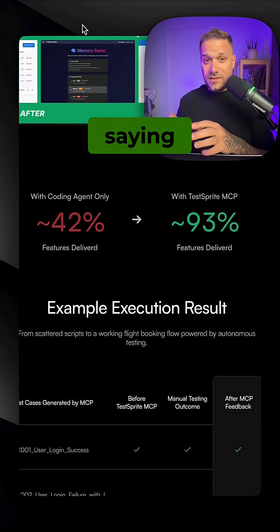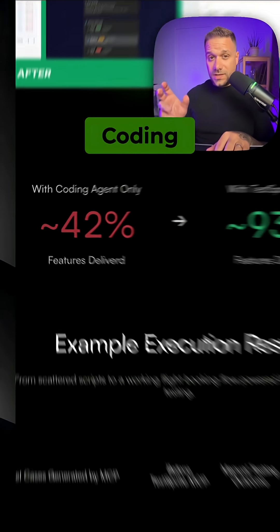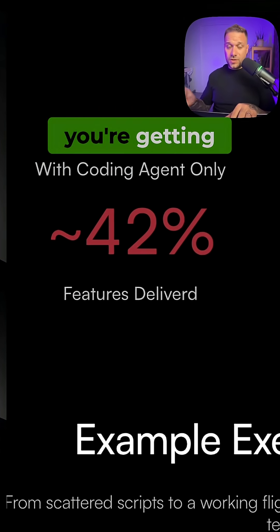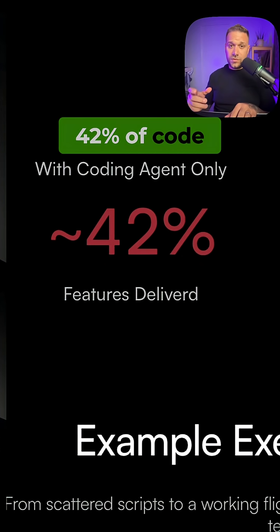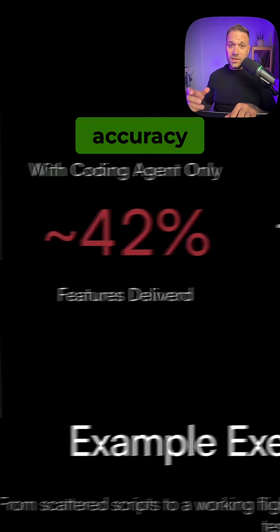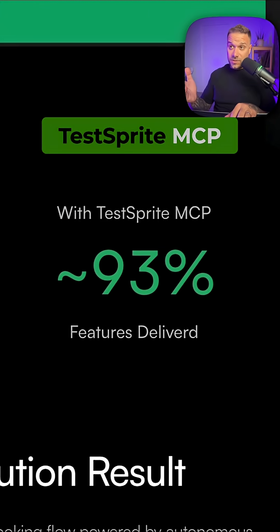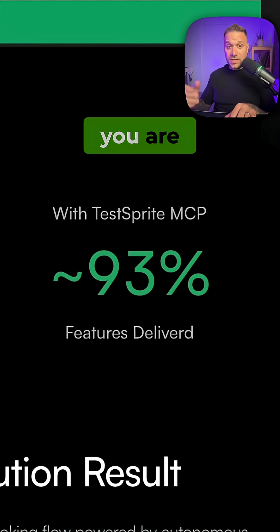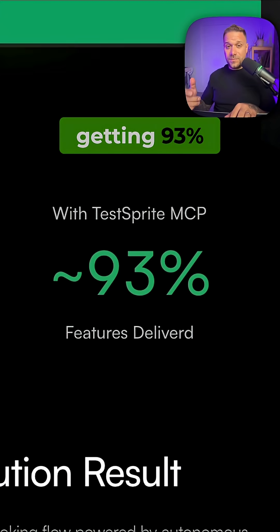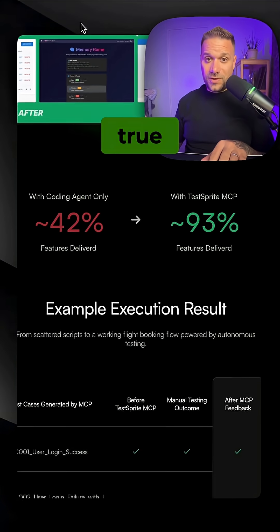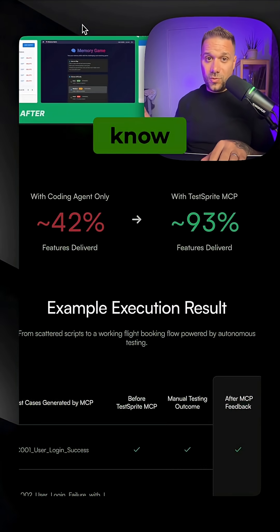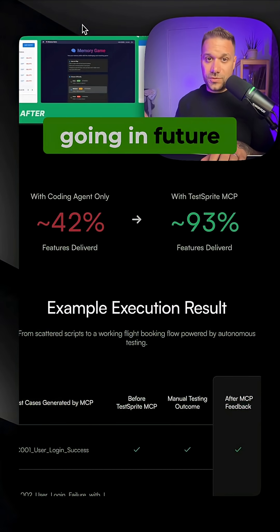They are even saying that with the coding agent only you are getting 42% code accuracy, while with TestSprite MCP you are getting 93%. And if that is true, I really don't know where software testing is going in the future.